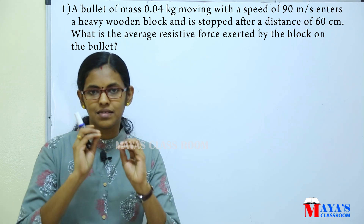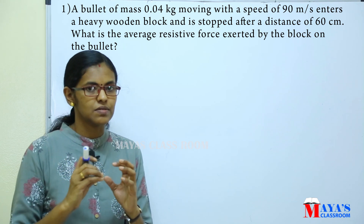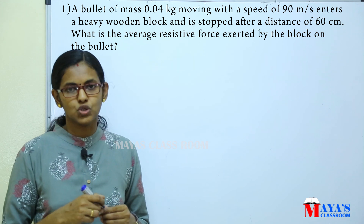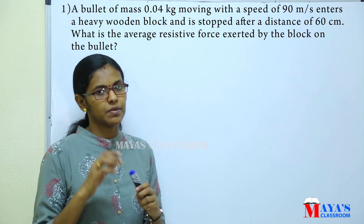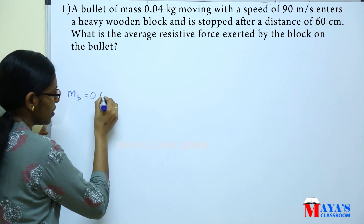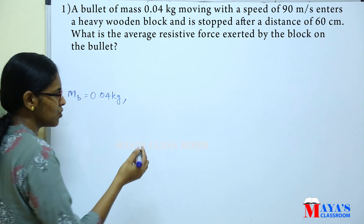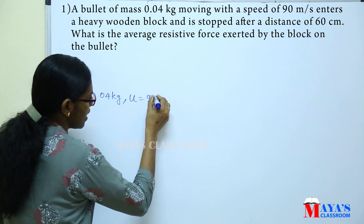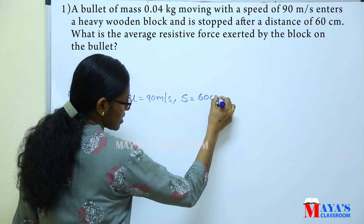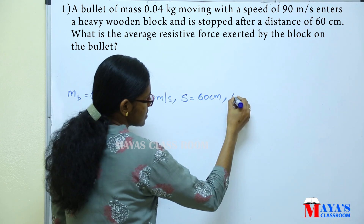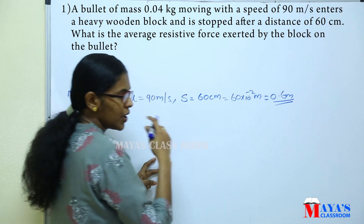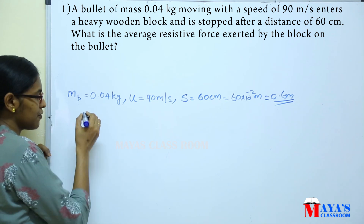The bullet hits the block and travels a distance of 60 cm before stopping. The block exerts a resistive force. The mass of the bullet mb is 0.04 kg, the initial velocity is 90 m/s, and the distance is 60 cm, which converts to 0.6 m. Now let's find the resistive force.